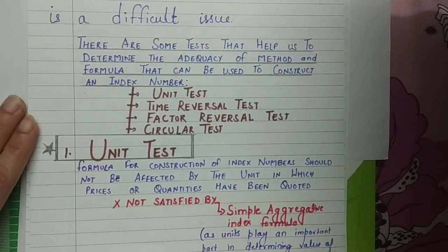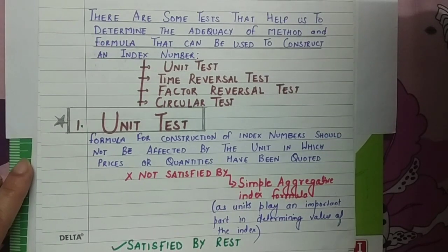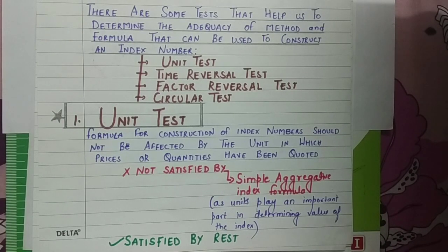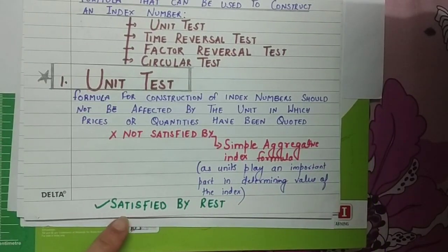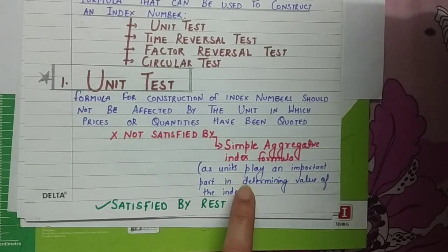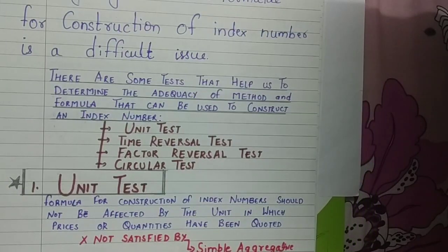The first test is the unit test. This test requires that the formula for the construction of an index number should not be affected by the units in which the prices or quantities have been quoted. If you change the units in which prices or quantities are expressed, the index number answer should not be affected. The unit test is satisfied by all index number formulas except the simple aggregative index formula, because in that formula units play the main role — if units change, the answer changes accordingly.